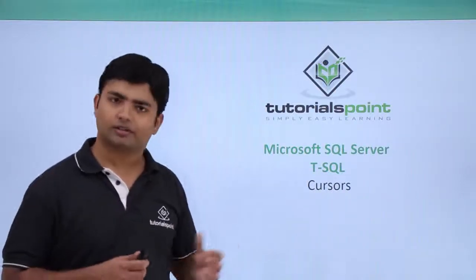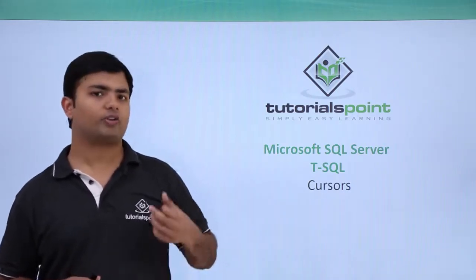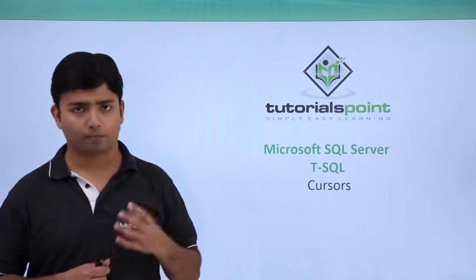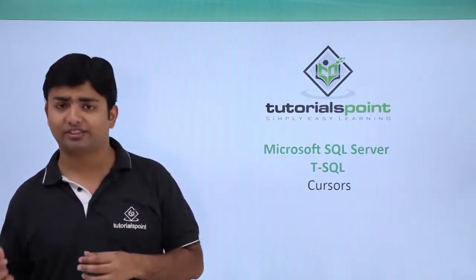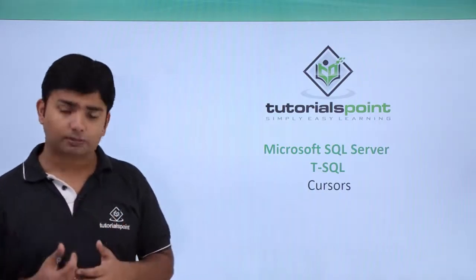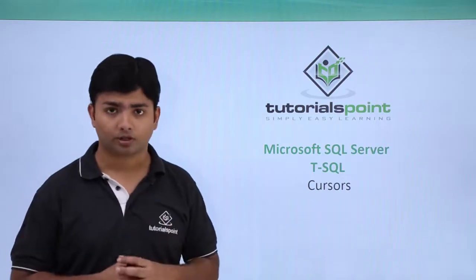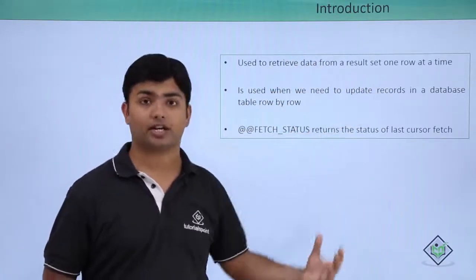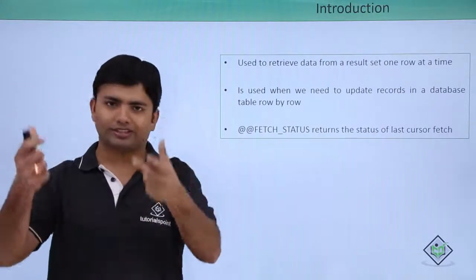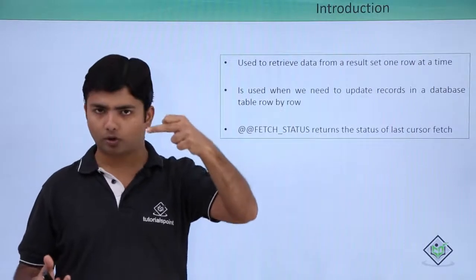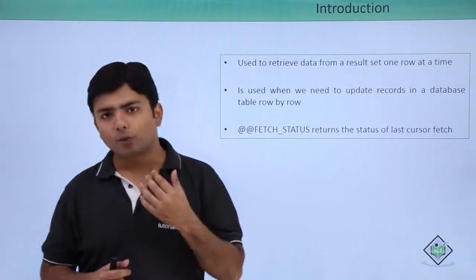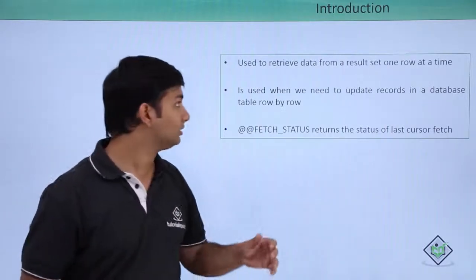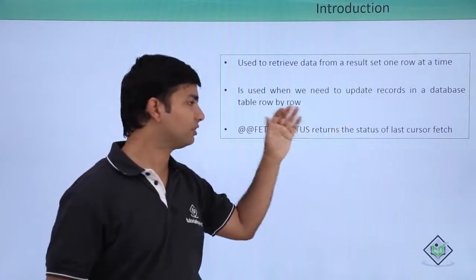In this video, we are going to implement Cursors. So far in the Transact SQL block, we have written SELECT statements returning a single value stored by a variable. But if we have a requirement where a SELECT statement returns multiple records, a single variable cannot handle multiple values. So for that, we will use Cursors, which are used to retrieve data from a result set one row at a time. Whenever we want to do operations with result set records individually, we can use Cursors, as they are used when we need to update records in a database table on a row-by-row basis.